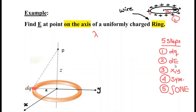Let's say Q ring. So lambda equals Q — the total charge on the ring — divided by the total charged length, which is the circumference 2πA. The units of lambda are coulombs per meter.